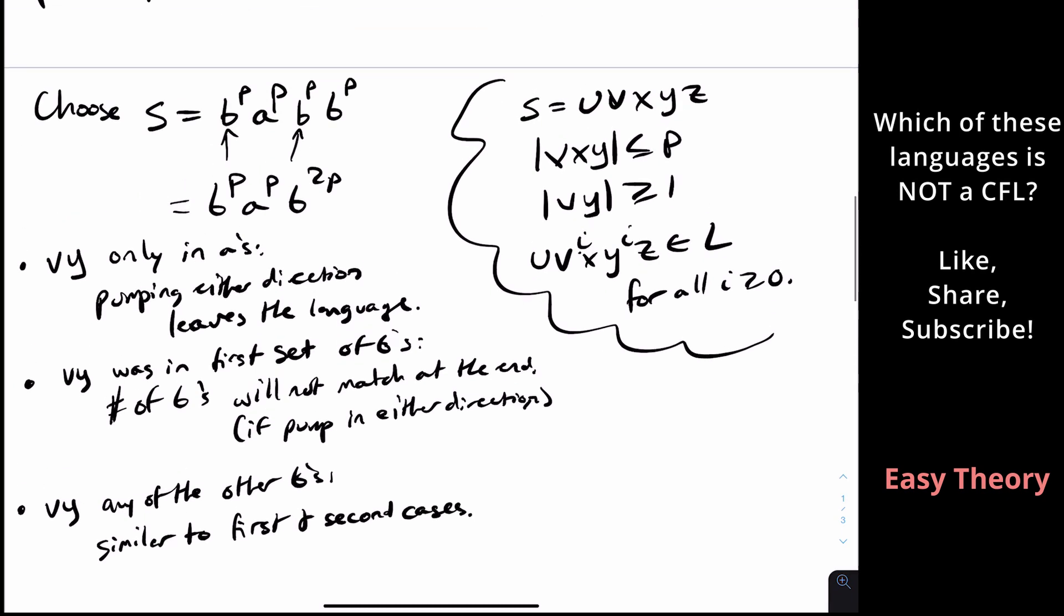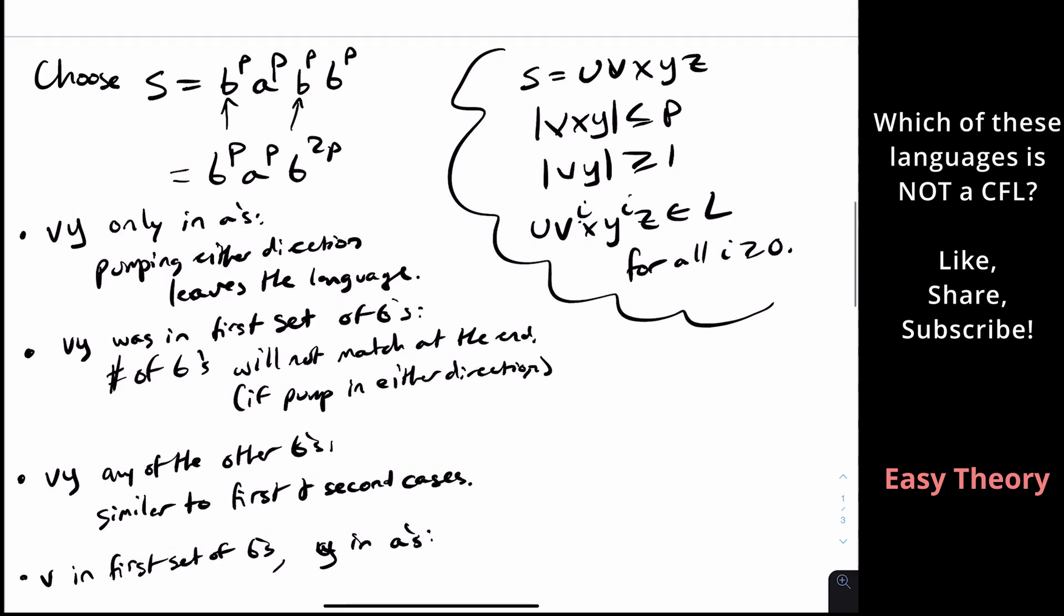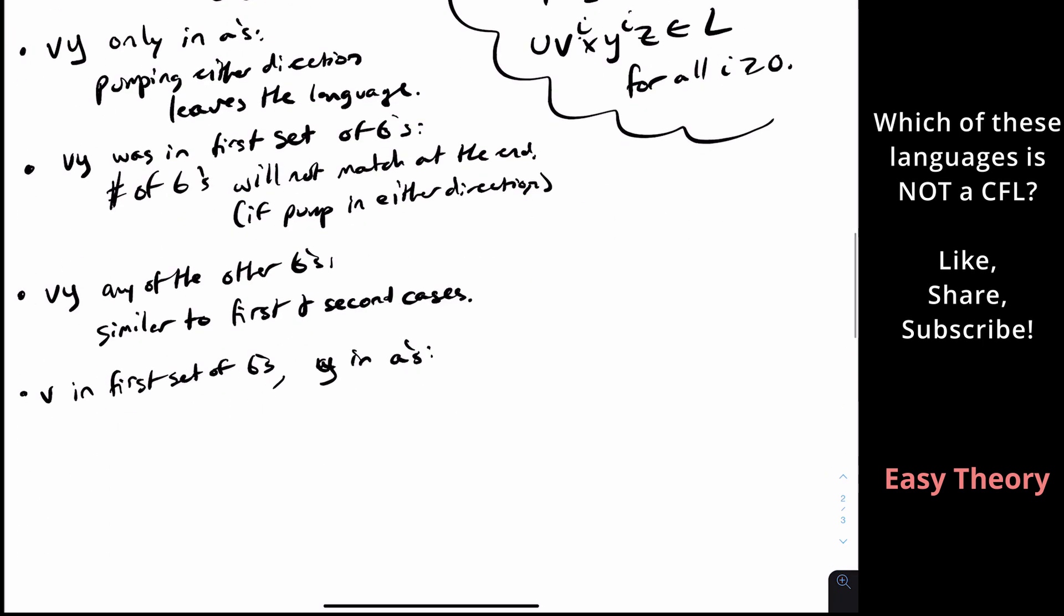And if it had some of the third section and some of the fourth section, well, if we pump in either direction, both cases will fail. So therefore we leave the language in those cases. So then the other case might be if v in first set of b's and y in a's. So that means that the v is in this part, the y is in this part. But if we pump up, we're not going to hit this run of b's at all, because we're only in the first two sets. So this is similar to other cases as well. And these are all the decompositions.